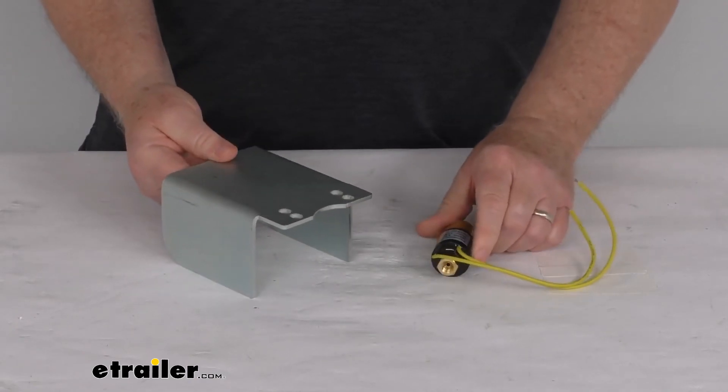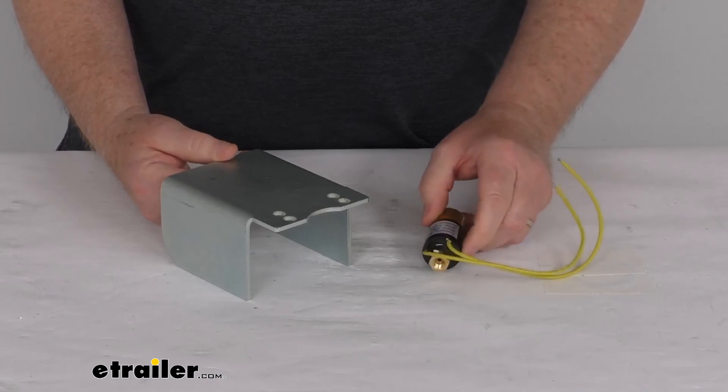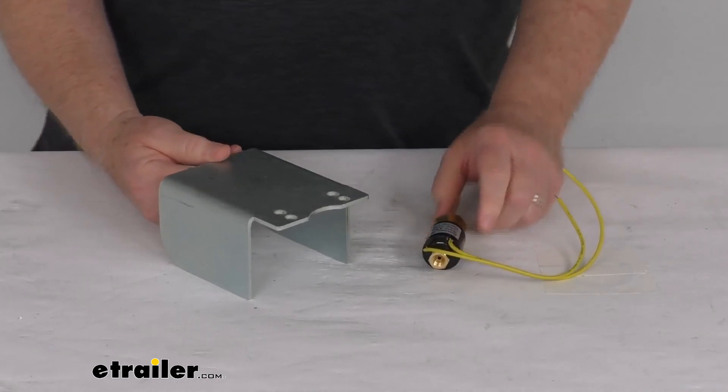But that should do it for the review on this non-bypass reverse lockout solenoid kit for the Demco DA10 and the DA91 hydraulic brake actuators.